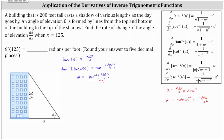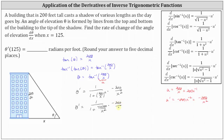So now differentiating both sides of the equation with respect to x, we have d theta dx, or theta prime, is equal to the derivative of inverse tangent u, which is 1 divided by the quantity 1 plus u squared, times u prime. In our case, that is 1 divided by the quantity 1 plus the square of 200 divided by x, times u prime, which is negative 200 divided by x squared.